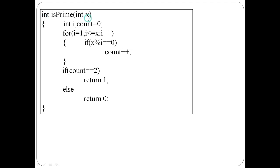In is_prime, the number x is checked: if it is properly divisible, the count is incremented. After the for loop, if the count value is 2, it is a prime number so return 1. Otherwise it is not a prime number so return 0.